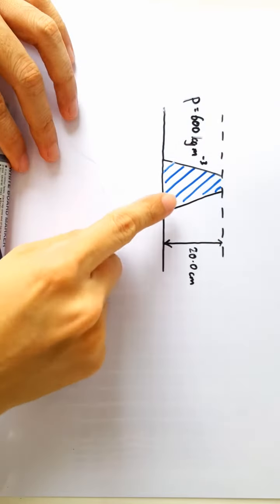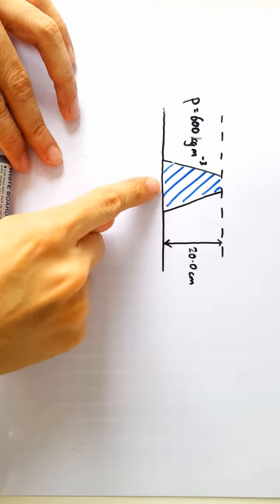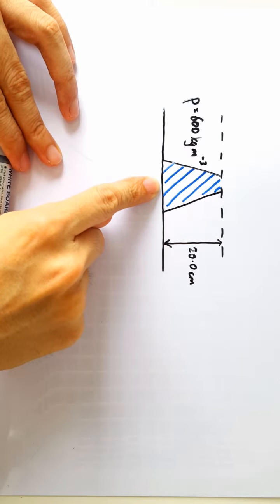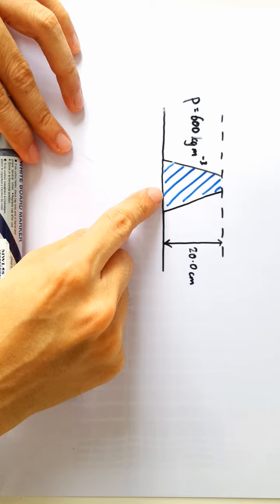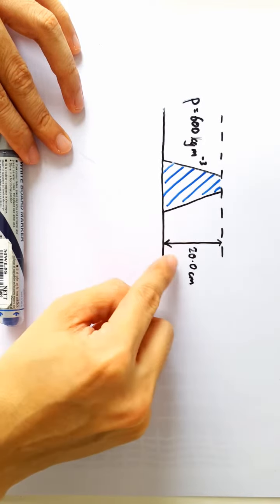Okay, we were asked what is the pressure exerted by this fluid at the base of the jar. This is as good as asking us what is the fluid pressure at the depth of 20 cm.